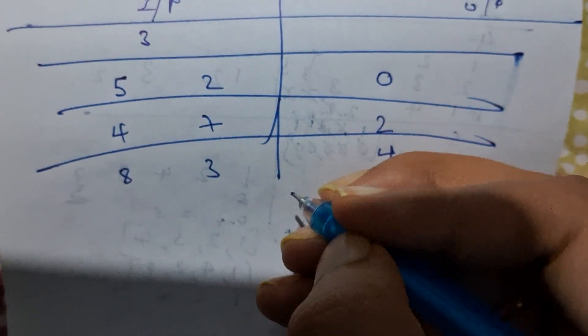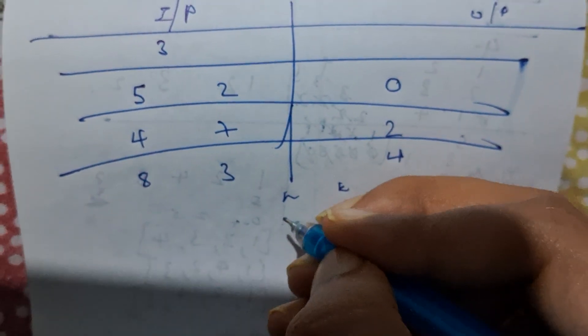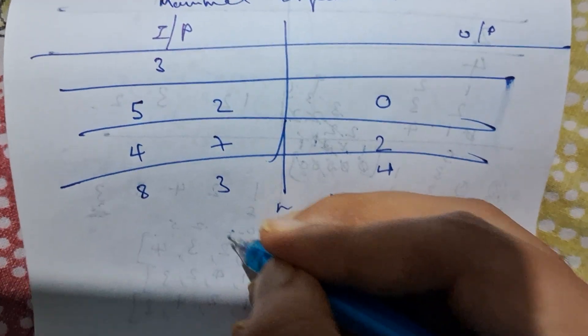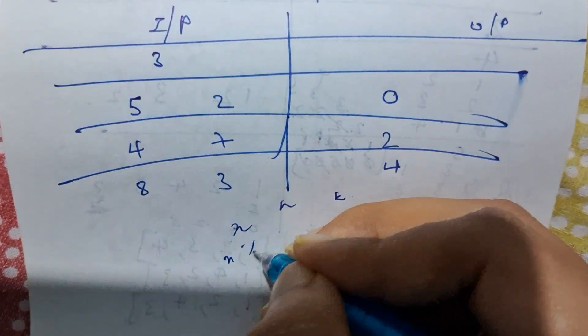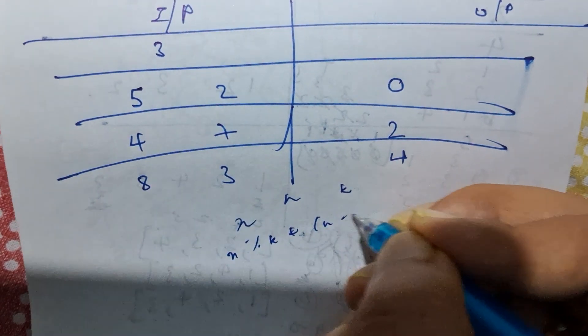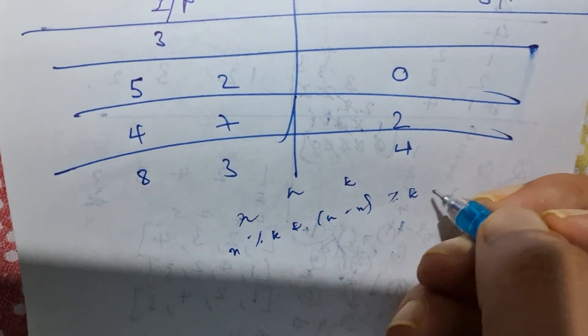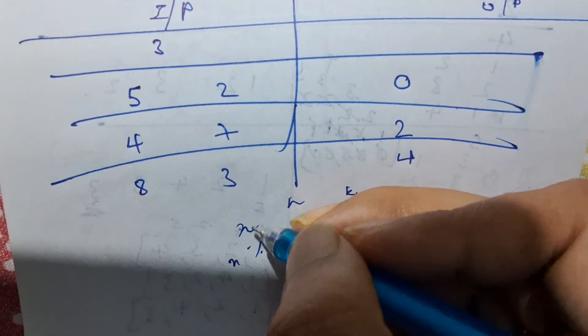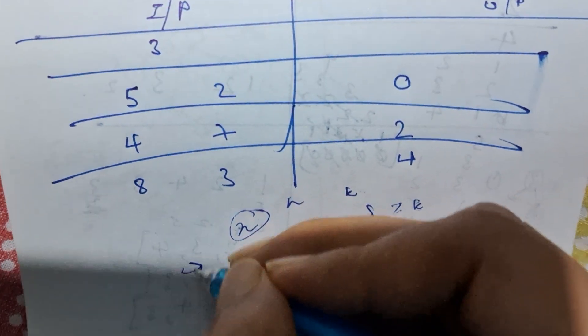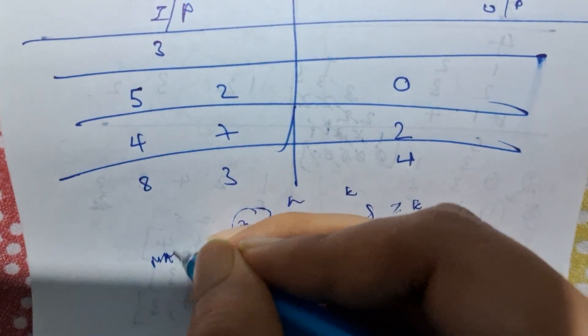The problem statement is: given T test cases, you are given two numbers n and k. You have to find an integer x such that the value of (x mod k) + (n minus x) mod k is maximized.